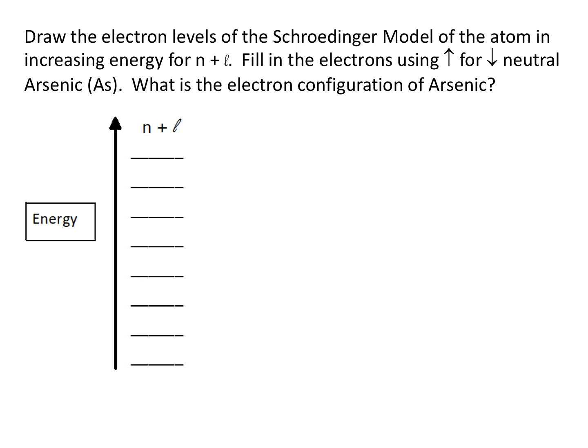This is a question asking us to relate the electron levels of the Schrödinger model of the atom to the electron configuration we get from looking at the periodic table.